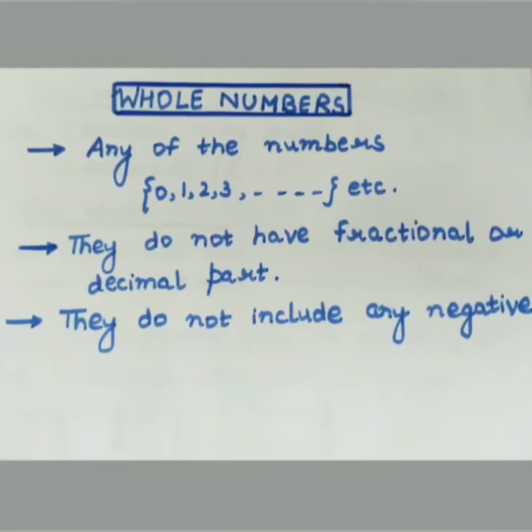What are whole numbers? Whole numbers are the numbers that start from 0 onwards and so on. Any of the numbers starting from 0 onwards — 'and so on' means it is not fixed up to when it has been there.